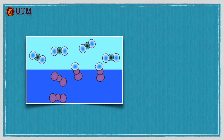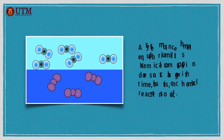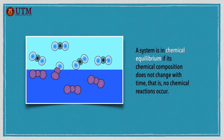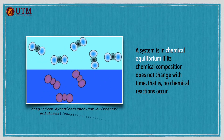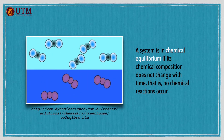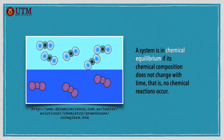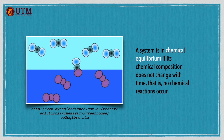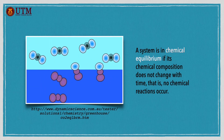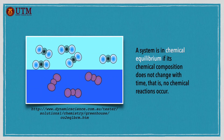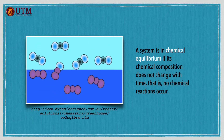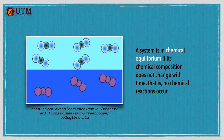Finally, a system is in chemical equilibrium if its chemical composition does not change with time — that is, no chemical reactions occur. A system will not be in equilibrium unless all the relevant equilibrium criteria are satisfied.